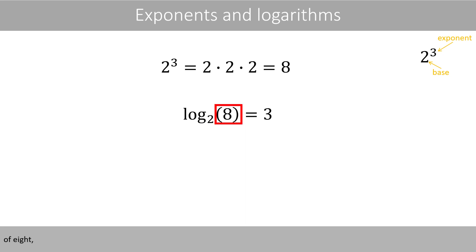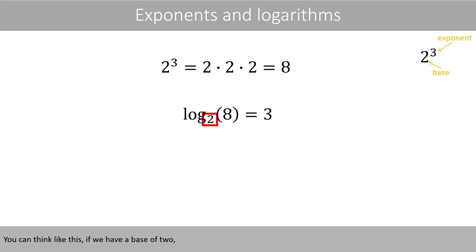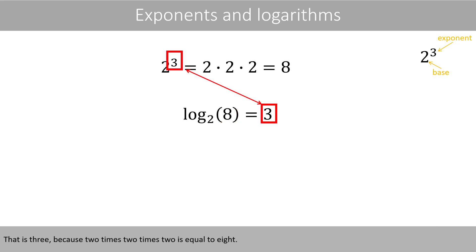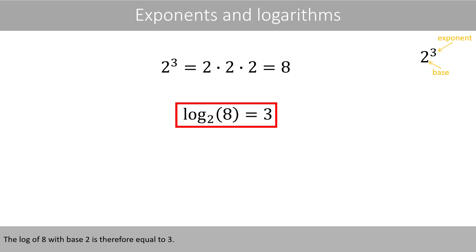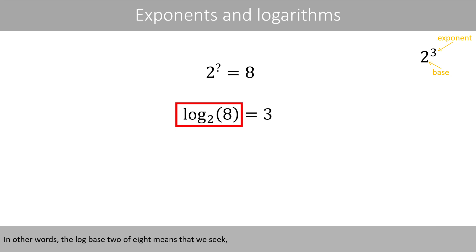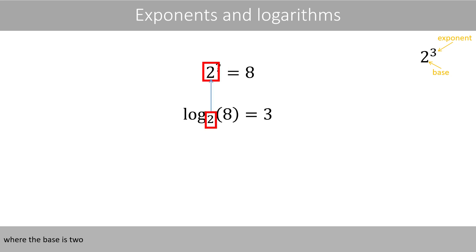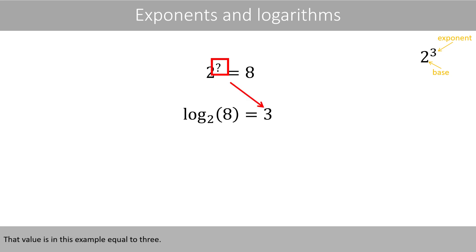The log base 2 of 8 is equal to 3. You can think like this: if we have a base of 2, how many times should we multiply this base by itself to get 8? That is 3, because 2 times 2 times 2 is equal to 8. In other words, the log base 2 of 8 means that we seek the value that should be in the exponent, where the base is 2, to get 8. That value is equal to 3.